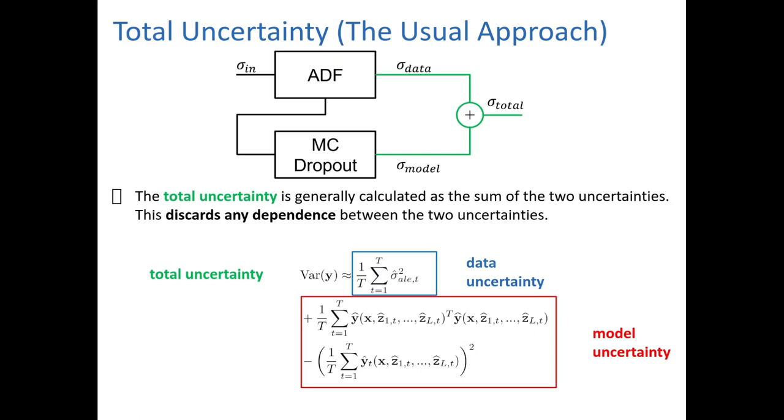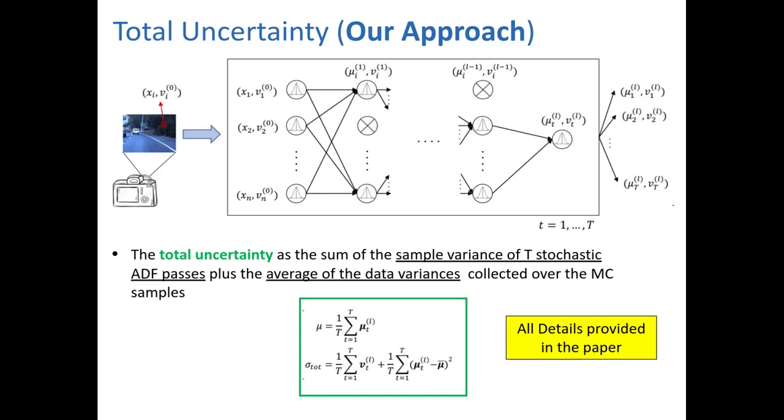The usual approach for finding the total uncertainty is just to sum the two: data uncertainty and model uncertainty. However, this approach discards any dependencies between the data and model uncertainty. But this is fundamentally wrong, because high sensor noise can also result in high model uncertainty. For this reason, we propose to compute the total uncertainty as an average of Bayesian belief networks, which can give a better estimate of the total uncertainty with respect to the classical summing approach. All the details of this are provided in the paper.